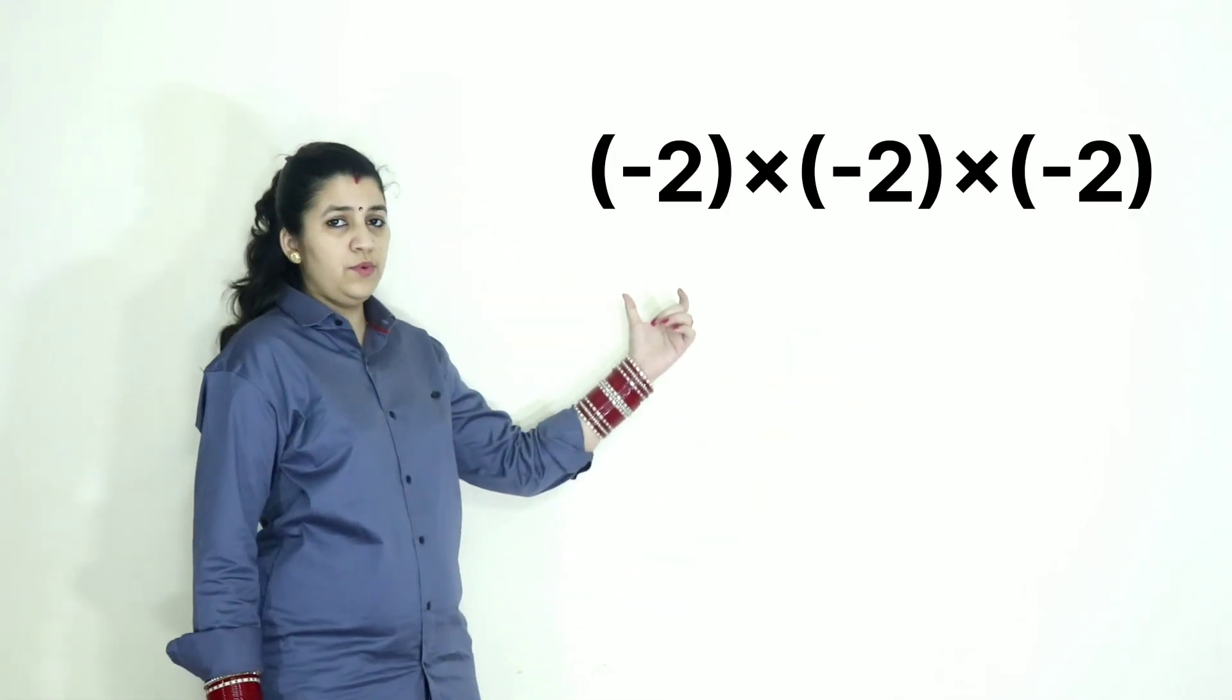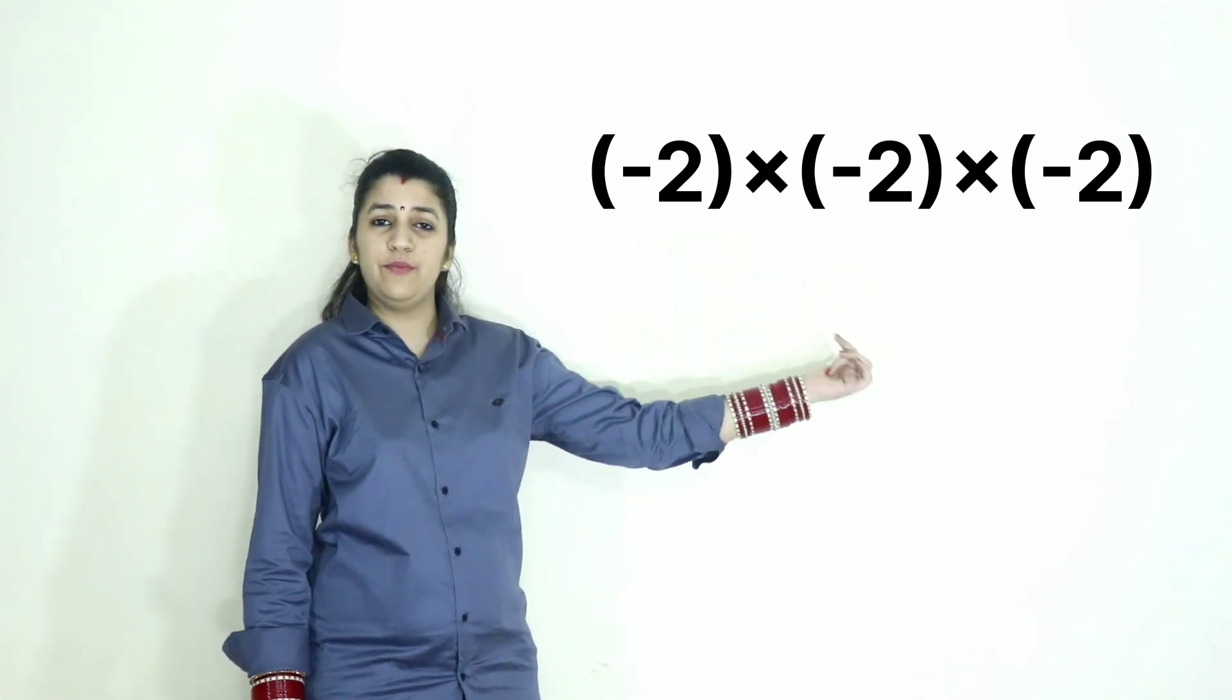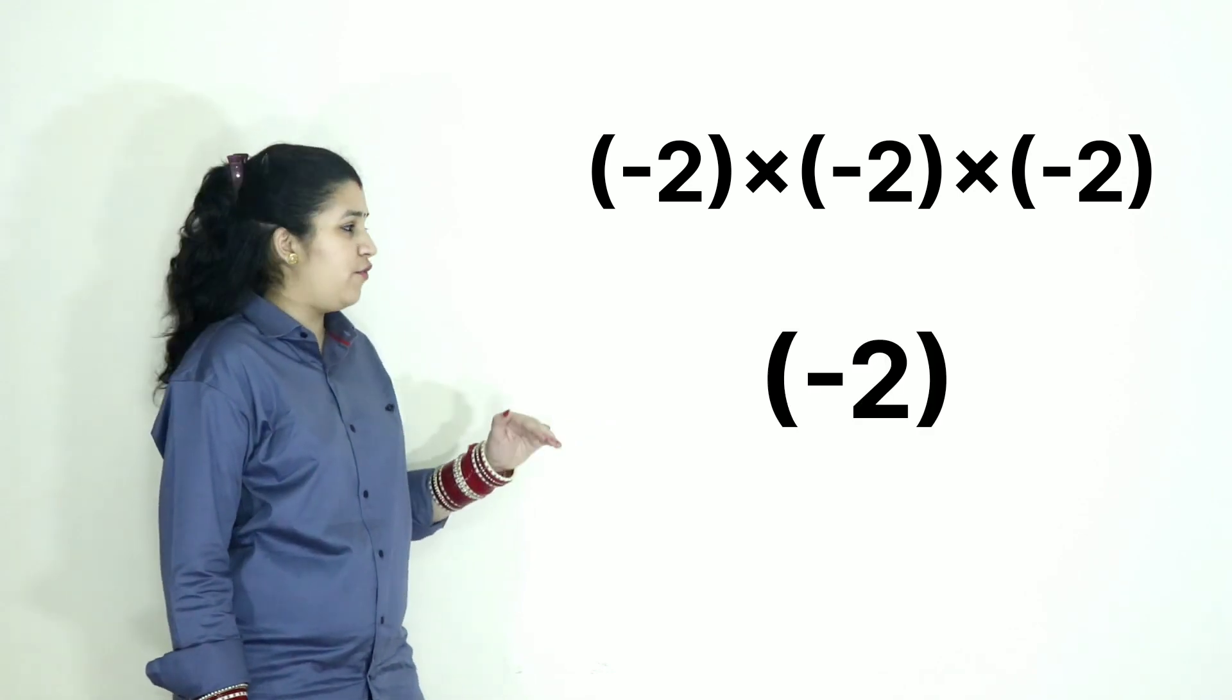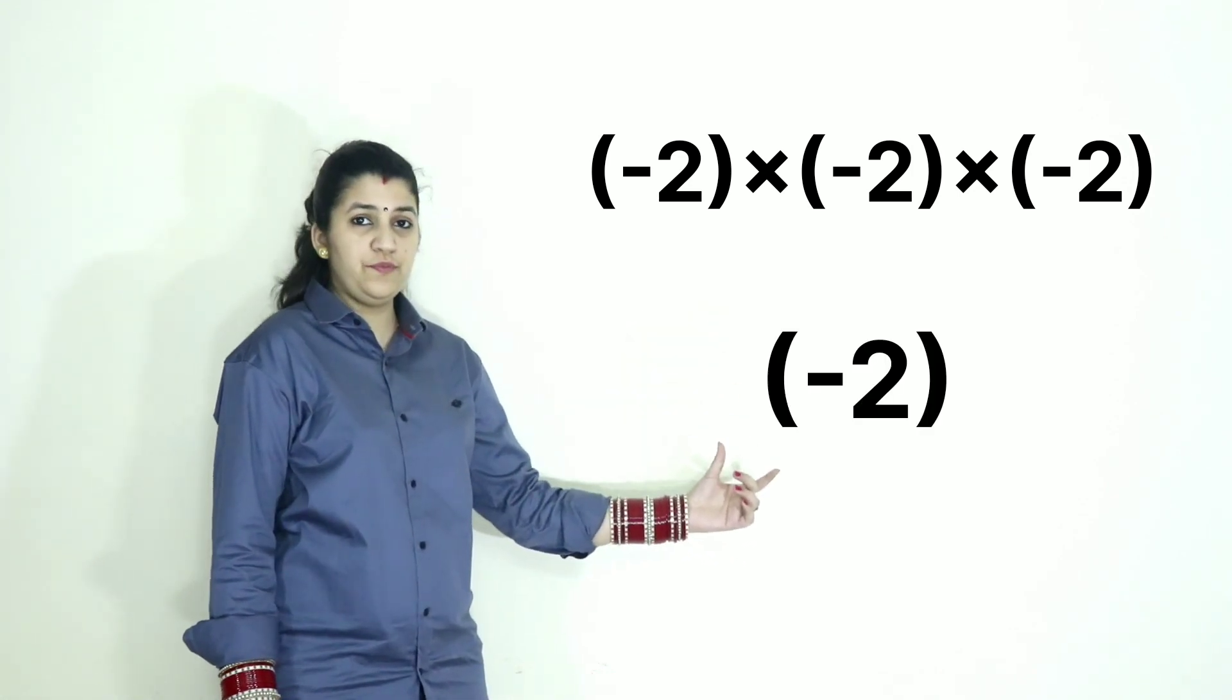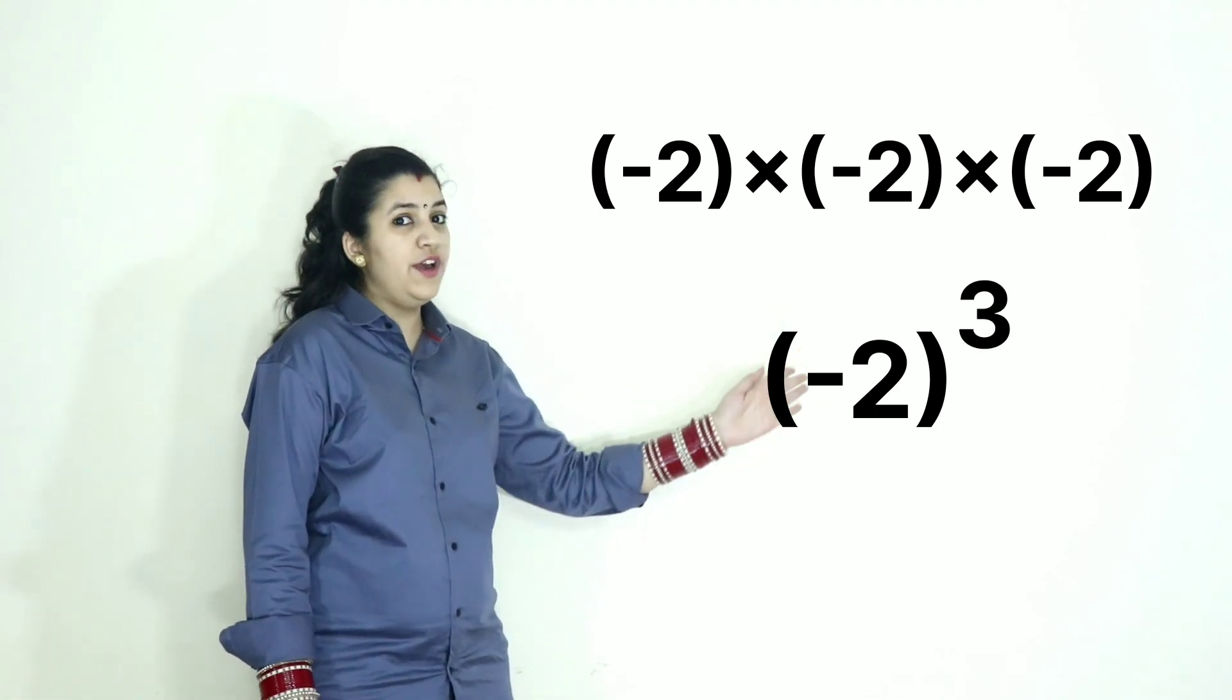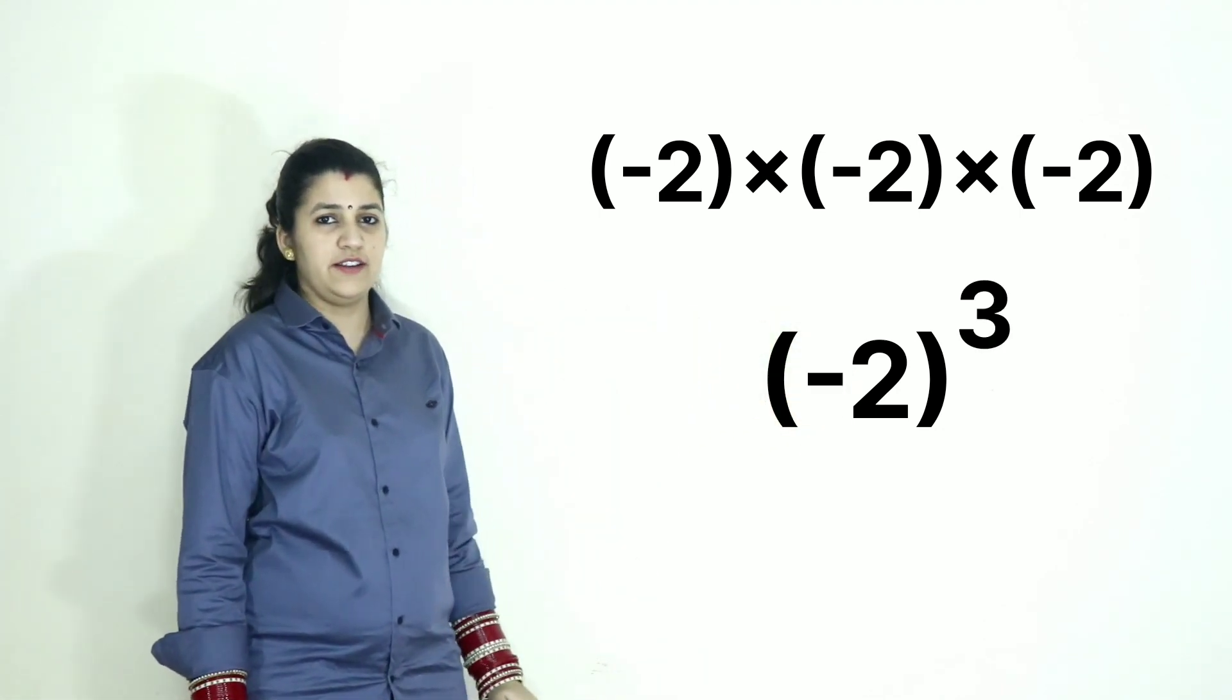In the same way, if I ask you minus 2 into minus 2 into minus 2, we have to again write this number in the form of exponents. So what will we write? Minus 2. How many times? 1, 2, 3. So minus 2 raised to the power 3. That is the answer.